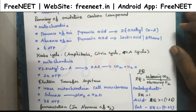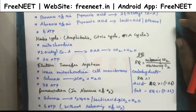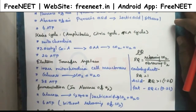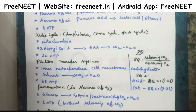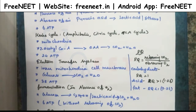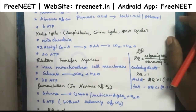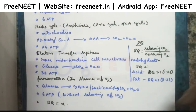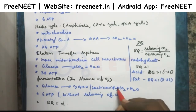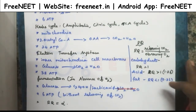Then we are going to see about fermentation. The fermentation process always takes place in the absence of air. During this process, it does not release carbon dioxide. In fermentation, glucose is converted into ethanol. During this process, 6 ATP is released.